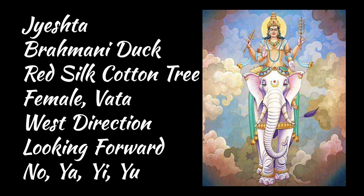Each nakshatra can be divided into four quarters or padas — four sections of 3 degrees 20 minutes each. The first quarter runs from 16 degrees 40 minutes to 20 degrees of Scorpio, falling under a Sagittarius navamsa. Those born under this first quarter are very cheerful, happy, and humorous — easy to be around, extremely caring, generous, and protective. They love exploring and learning and have a love for deep philosophy. There can be some difficulties around finances with lots of ups and downs, bringing considerable worry.